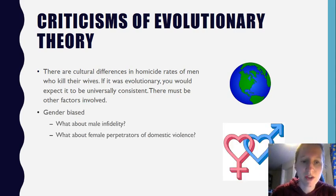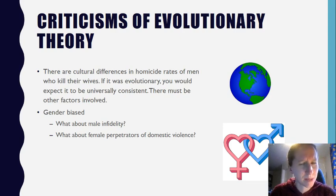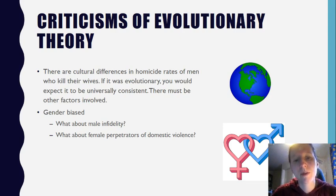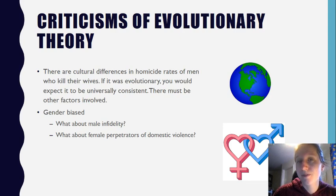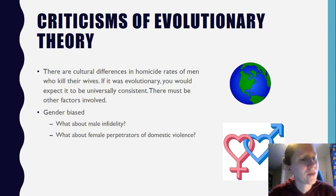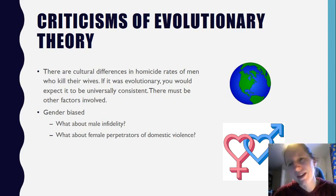Another criticism is that the explanation is gender biased. It doesn't really consider the fact that males may be unfaithful as well, and it doesn't explain the fact that some women are violent. They are less reported and fewer in number than male perpetrators of domestic violence, but they do exist and this explanation does not account for them. Why would women be aggressive in this way, given that they can be confident the child they're carrying is their own and they are passing on their genes?